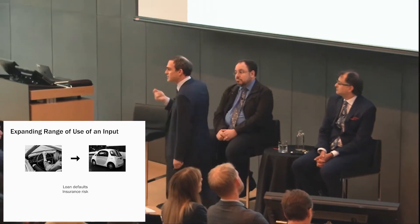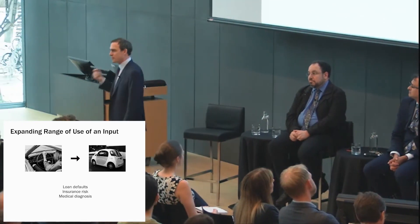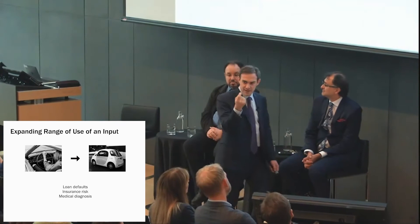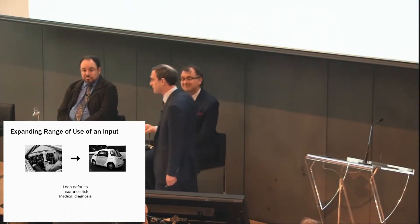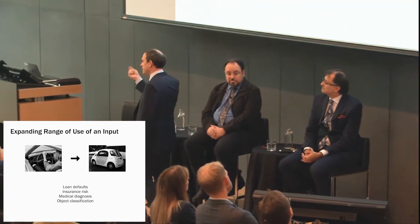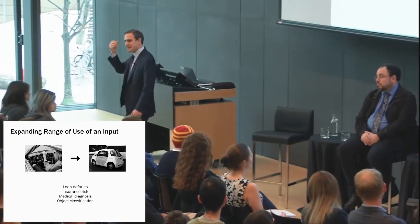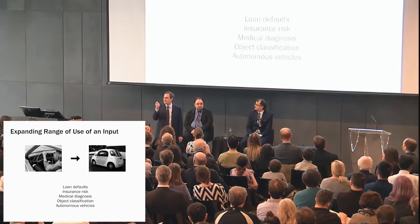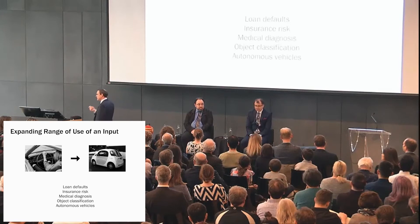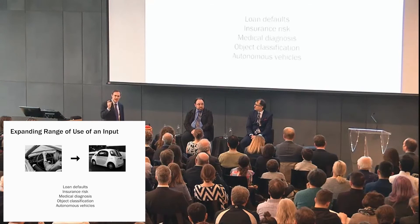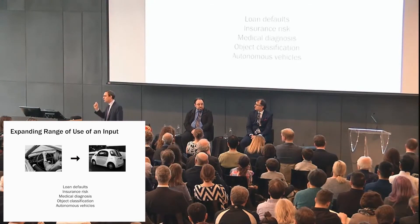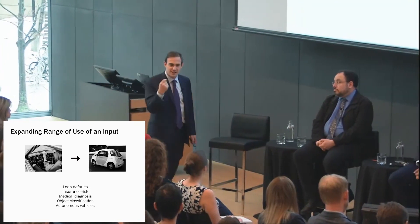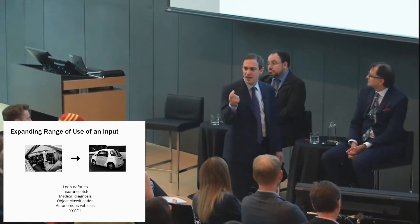We now use machines instead of humans to do that. But as prediction technology has gotten cheaper, we've started to recognize new prediction problems. Medical diagnosis is a prediction problem — the doctor takes information on your symptoms and fills in the missing information about the cause. Object classification is a prediction problem. Facial recognition is a prediction problem. And autonomous vehicles have been a prediction problem. The reason we have such rapid advances in autonomous driving is the recognition that it can be reframed as a prediction problem: predict what a good human driver would do. And once you recognize that, you get a sense that there are all sorts of opportunities we haven't even dreamed of.